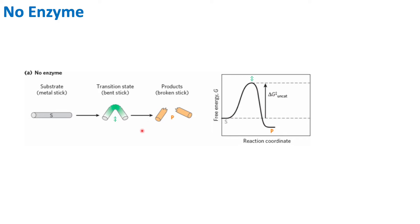If we take a look at our graph depicting what happens when there is no enzyme, essentially we have our substrate and we need to get to the product, but we must reach that transition state — that energy state needed to get to our products. The energy difference between our free substrate and that transition state energy is referred to as delta G. So our free energy difference of an uncatalyzed reaction, because there's no enzyme present, is an uncatalyzed reaction.